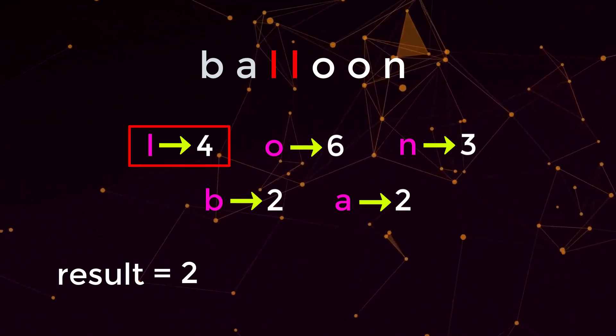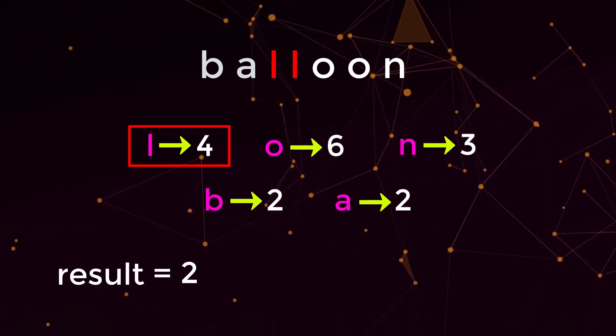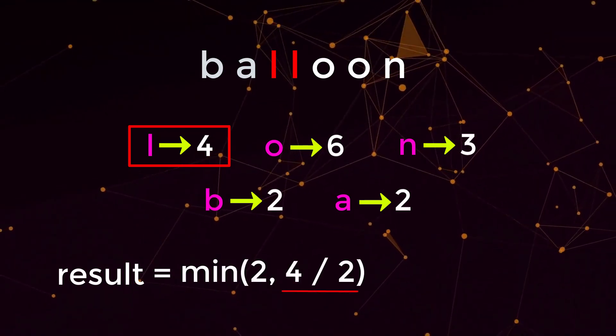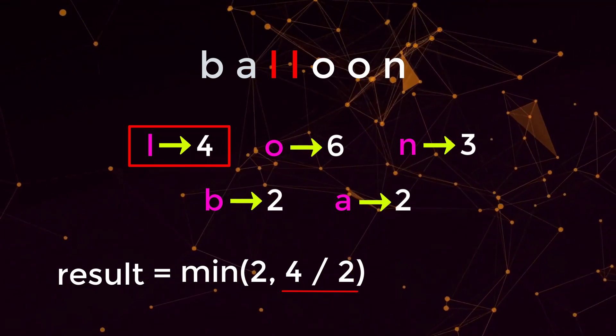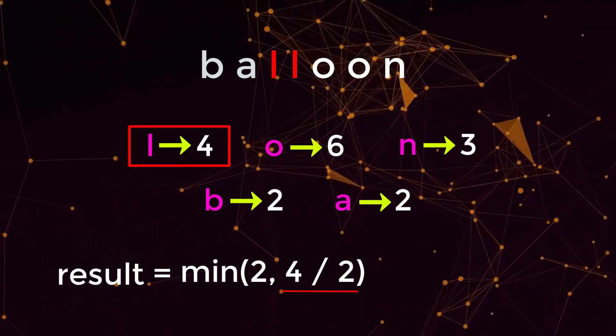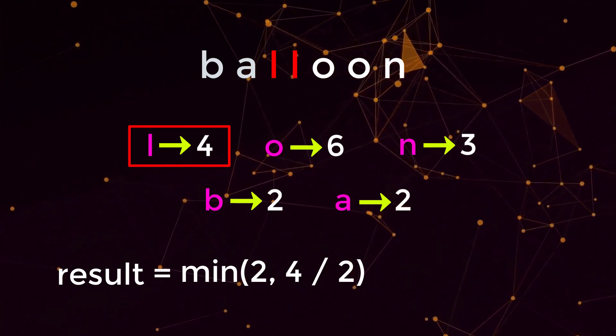Character l has a value of four, and balloon has two occurrences of the character l. That means if we take our value of four and divide it by two, that is how many words we can make up with the amount of l's that we were given. So once again, we're going to do the minimum between two and two. That would also be two.